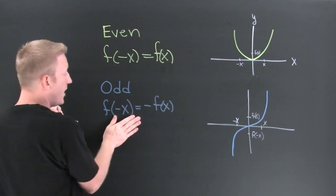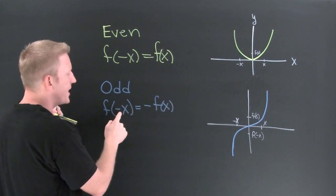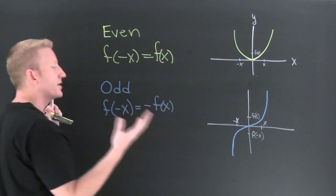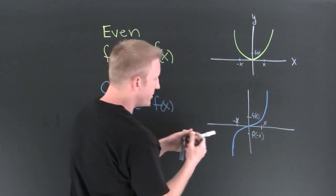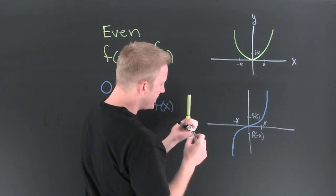Yes, an odd function is going to have this property. f of minus x is going to be equal to minus f of x. Okay, that's symmetry across the line y is equal to x.